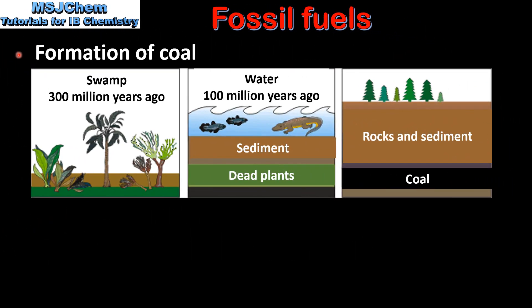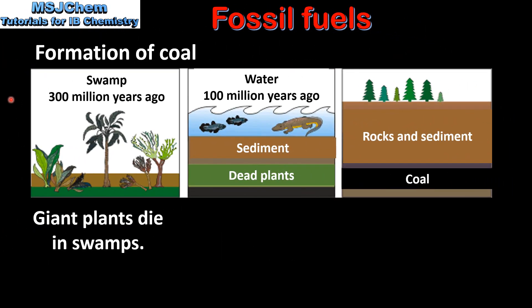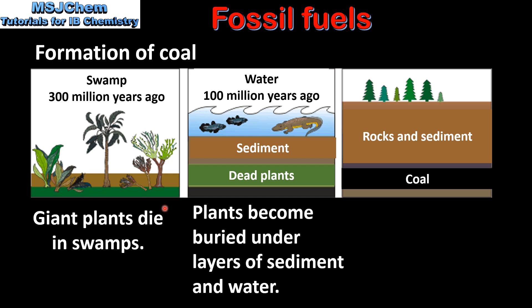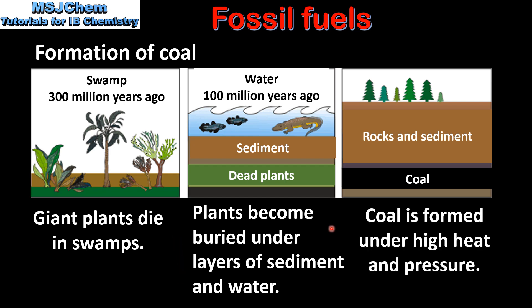Next we look at the formation of coal. About 300 million years ago, giant plants died in swamps. The plants became buried under layers of sediment and water. Coal is formed under conditions of high heat and high pressure.